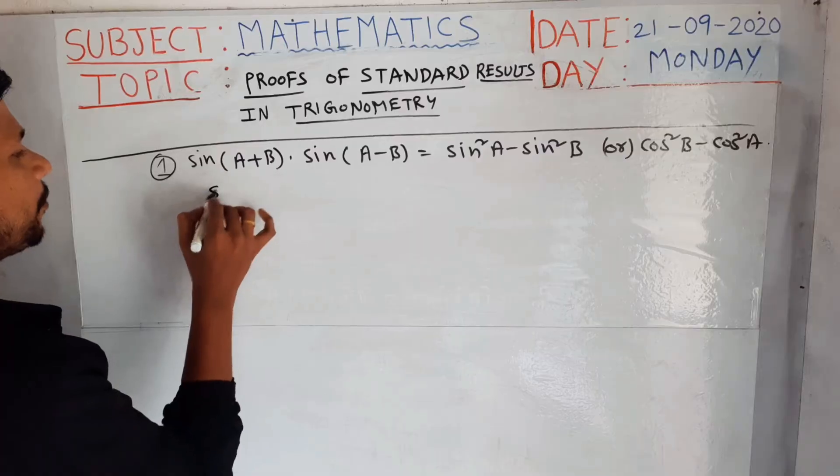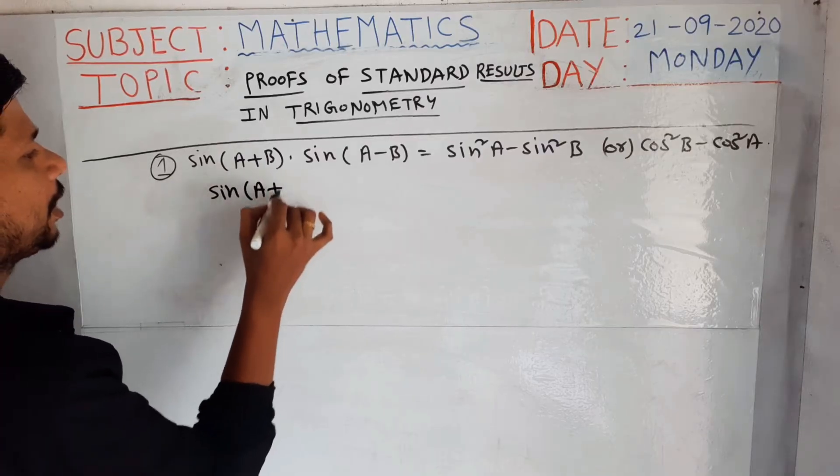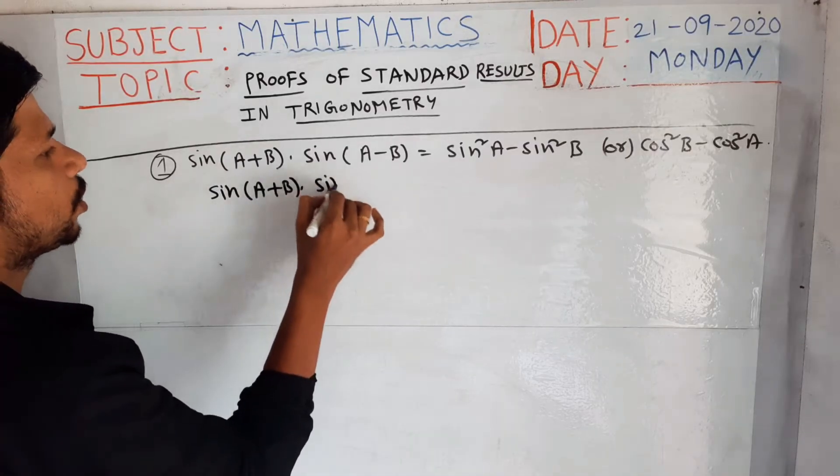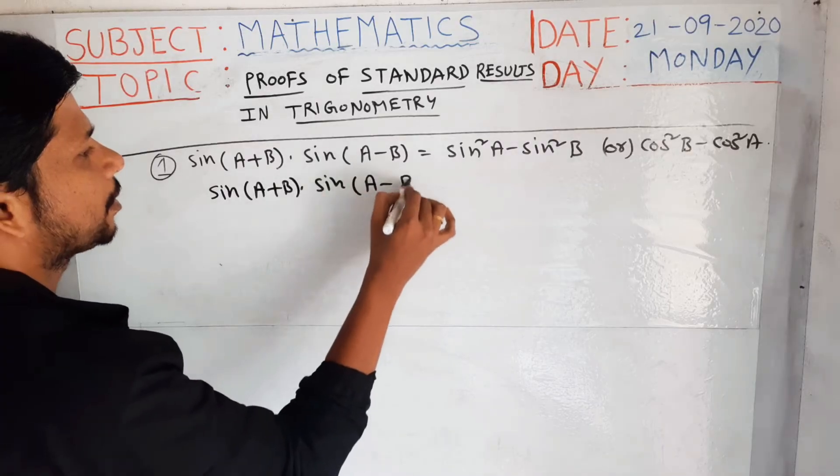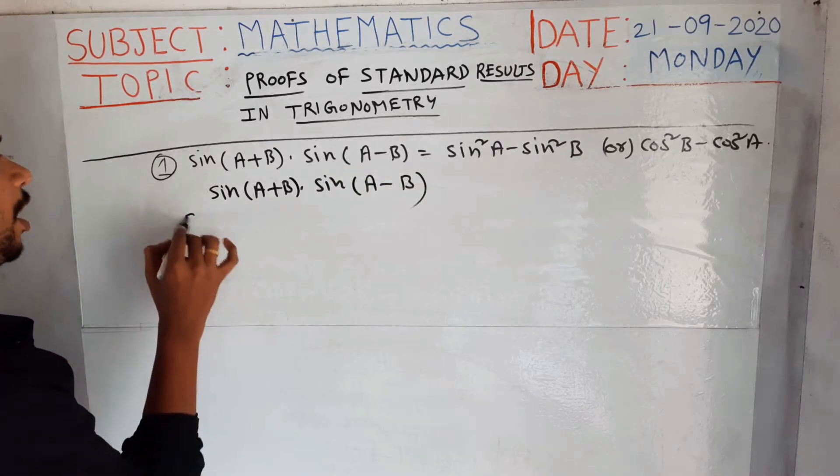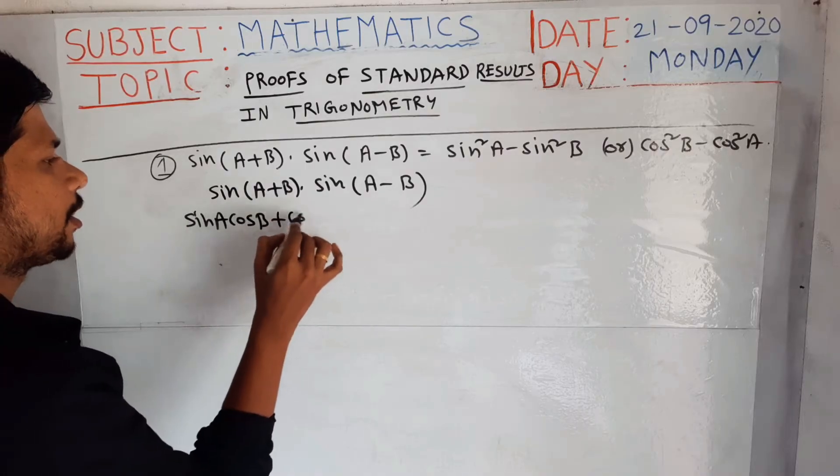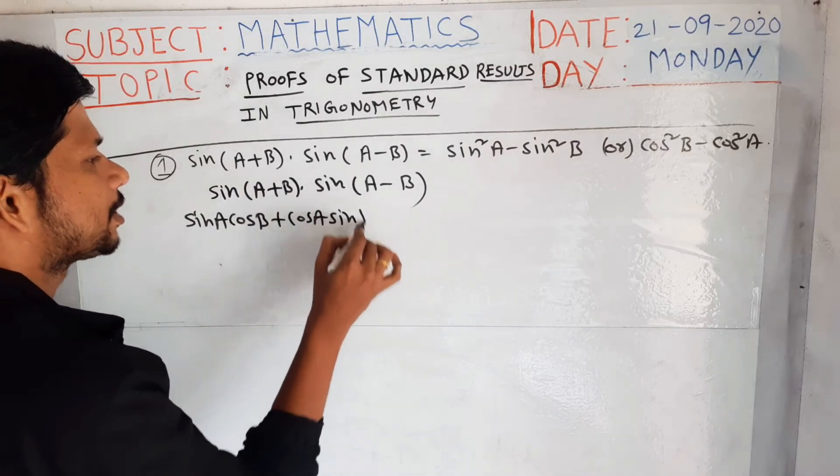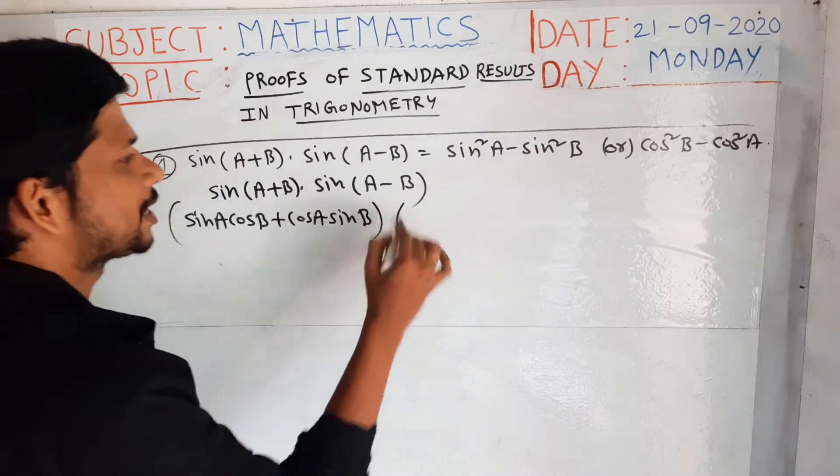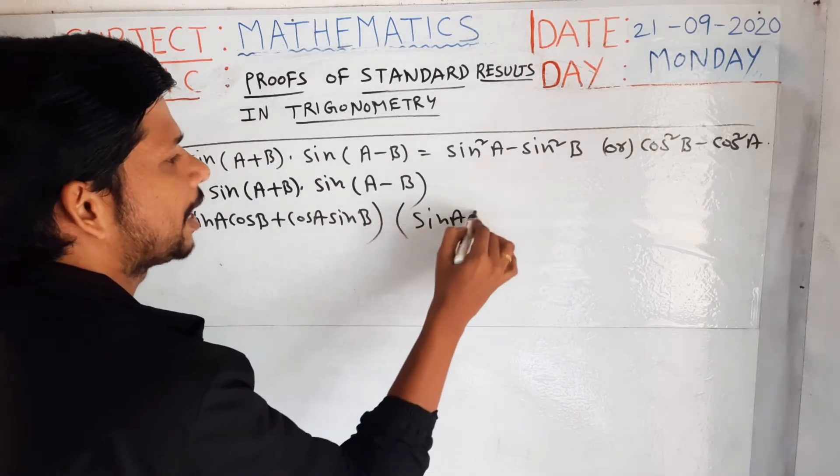So now for the LHS, I am taking sin(a+b) · sin(a-b). Sin(a+b) formula, as we all know, is sin(a)cos(b) + cos(a)sin(b), and sin(a-b) formula is sin(a)cos(b) - cos(a)sin(b).